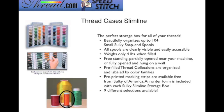There are two different types of nice cases that the threads come in if you buy a collection, and you can even buy empty cases if you'd like. The slimline case will store up to 104 of the snap size spools — the smaller spools — and it's really handy because it not only stores them, it protects your thread and is a great way to travel with all of your threads.